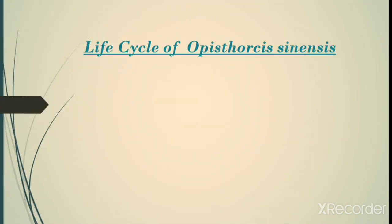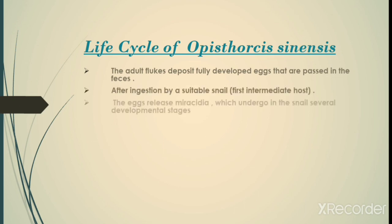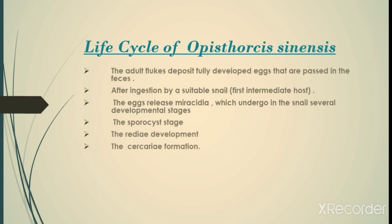The life cycle of Opisthorchis sinensis consists of the following: adult flukes deposit fully developed eggs; after ingestion by a suitable snail, the eggs release miracidia which undergo several developmental stages within the snail — the sporocyst stage, the redia development stage, and the cercaria stage.